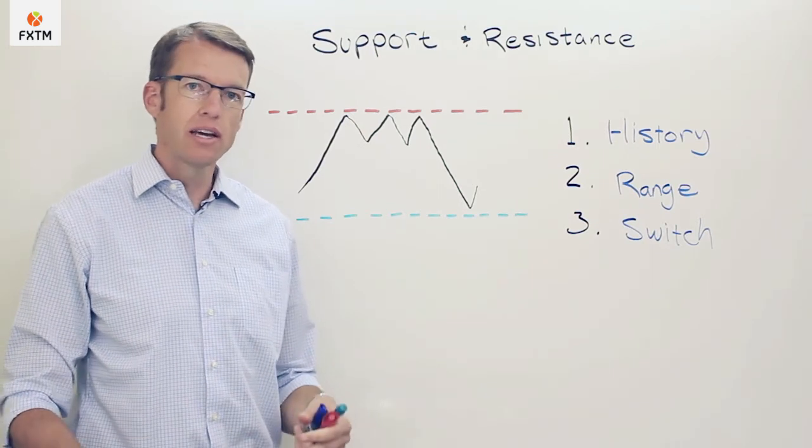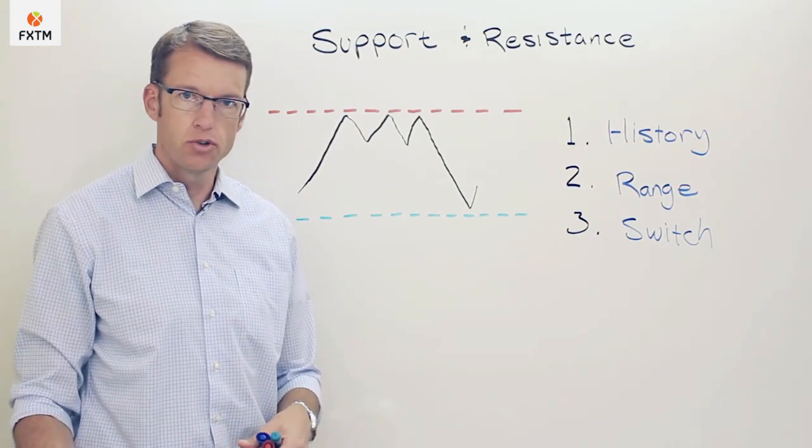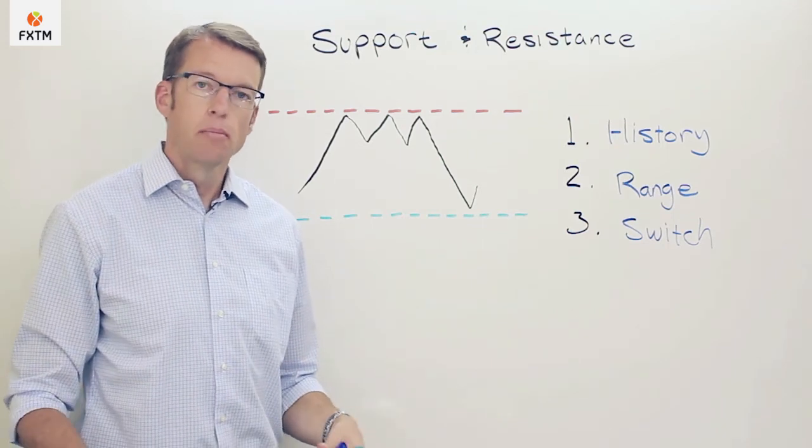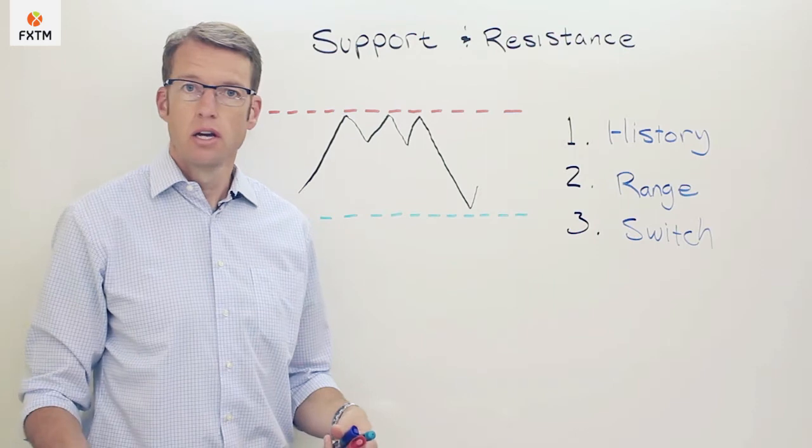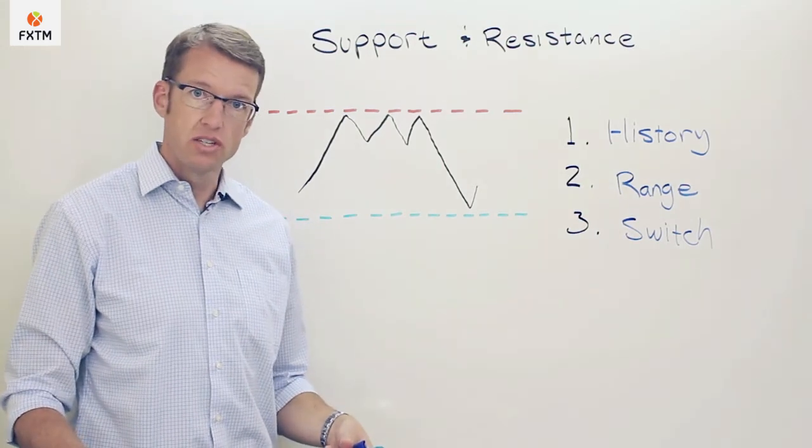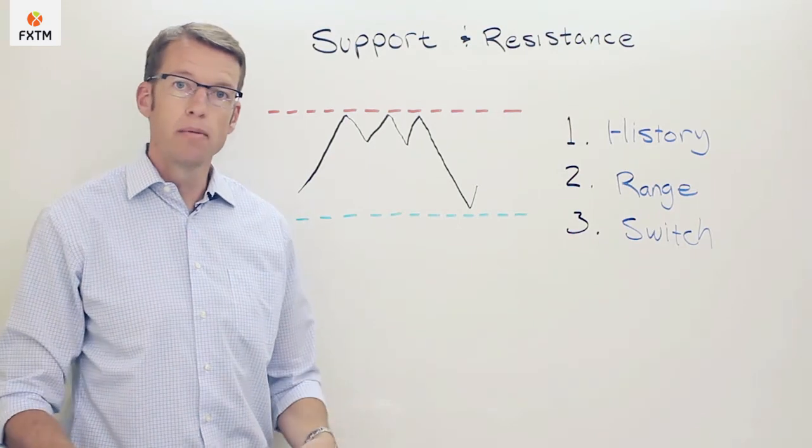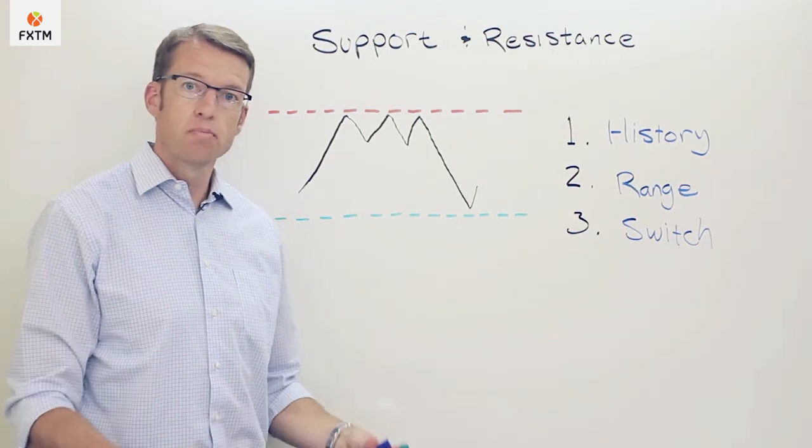Knowing where those support and resistance levels are will help us to not only identify entry opportunities for a new trade, or we might prioritize a particular technical signal, but also to understand where a trader is more at risk. Longs being more at risk at resistance and shorts being more at risk at support helps us to do a better job of managing the level of exposure in the portfolio overall.